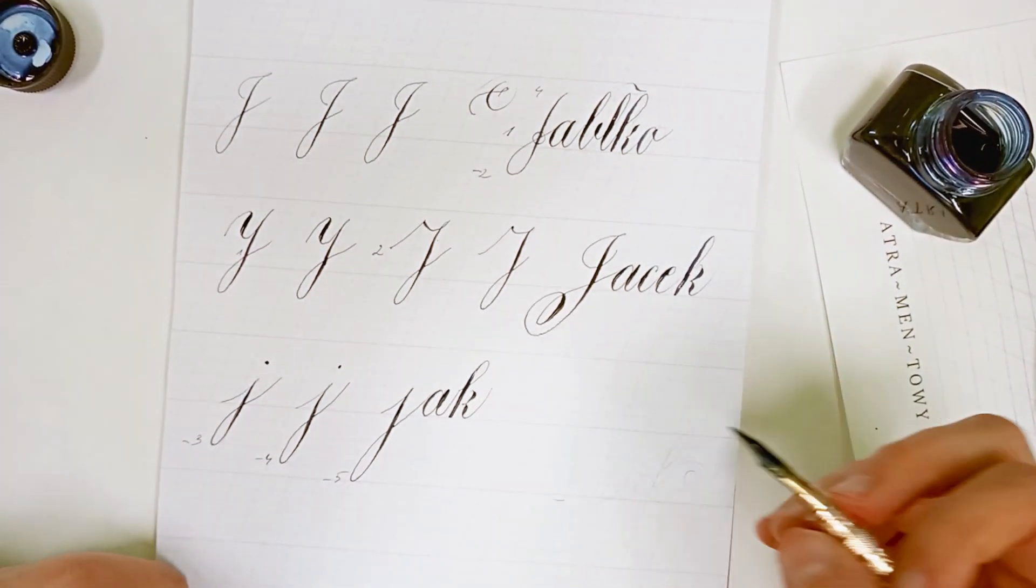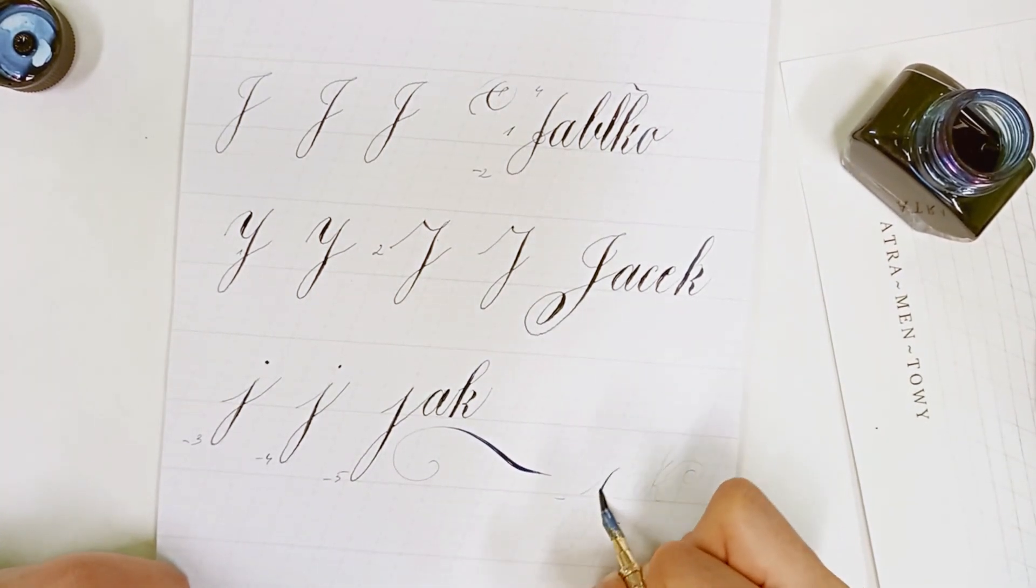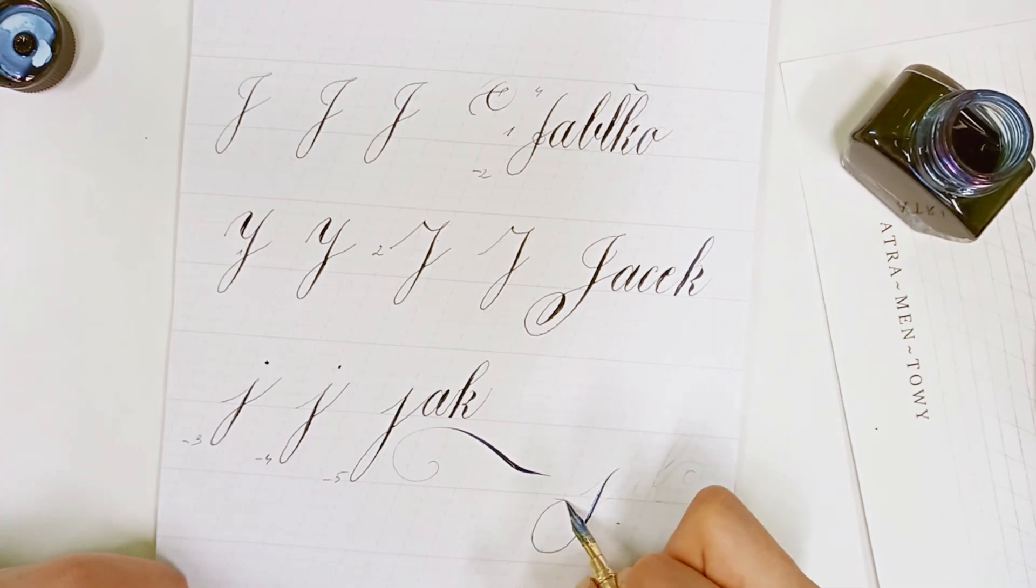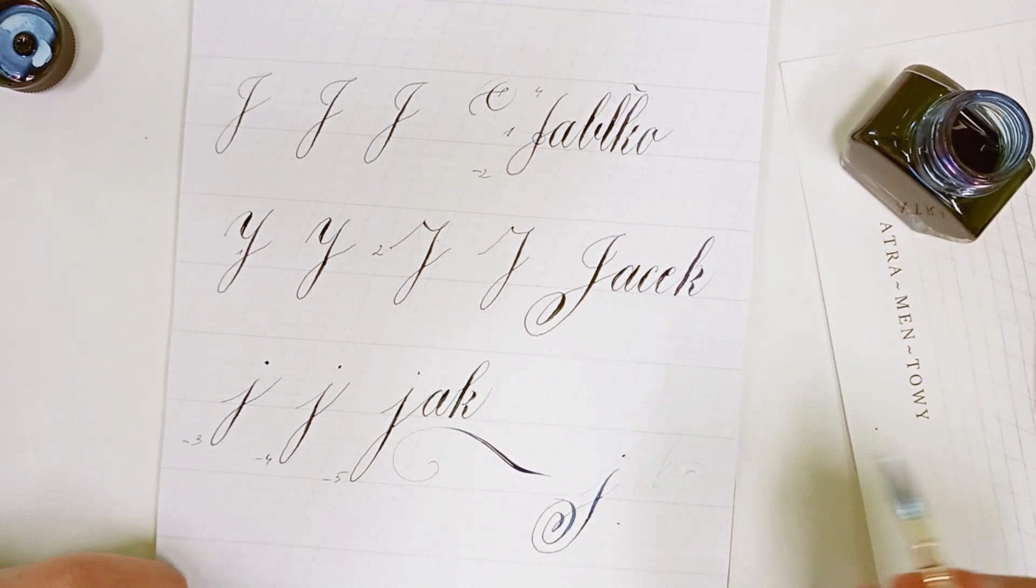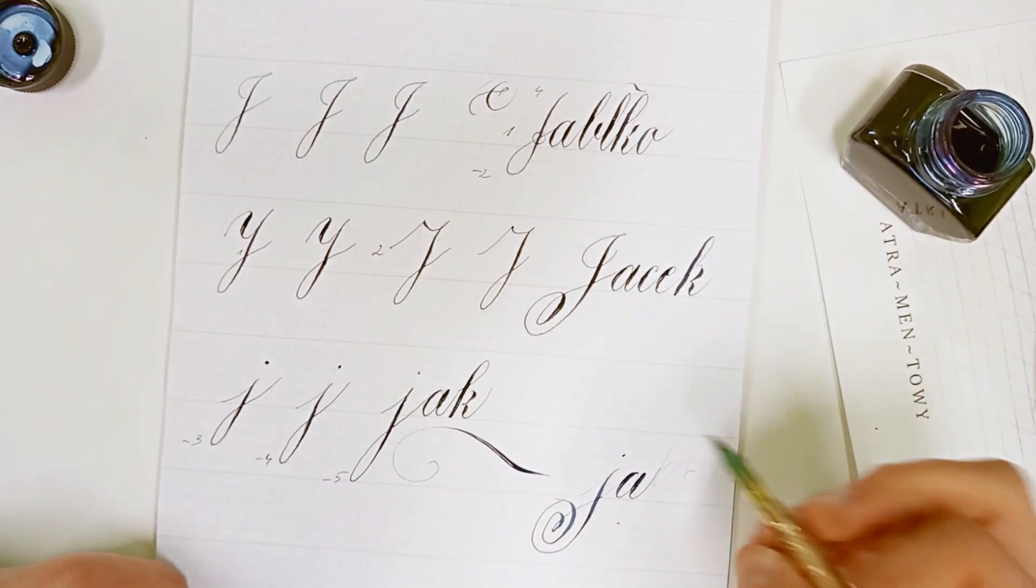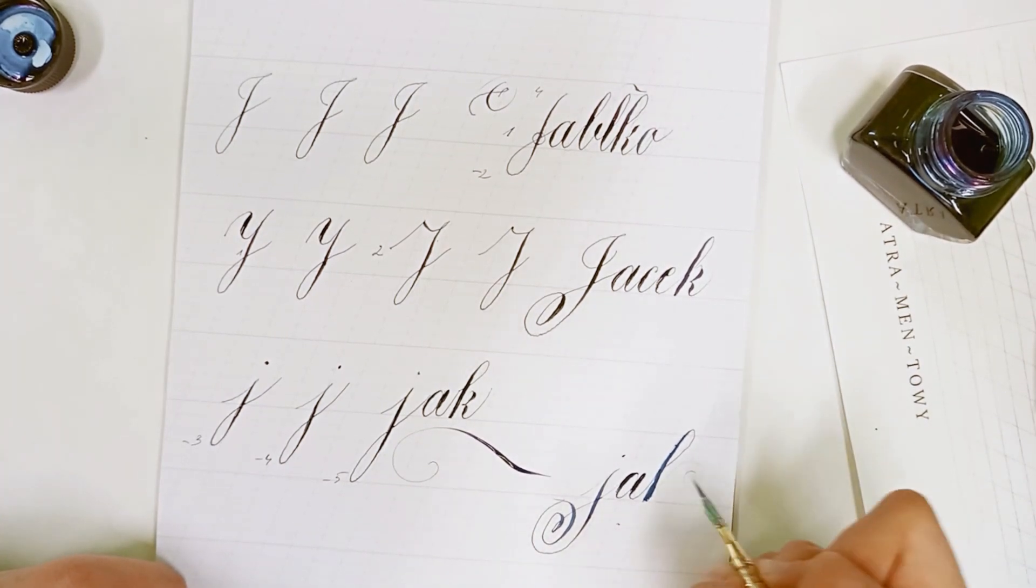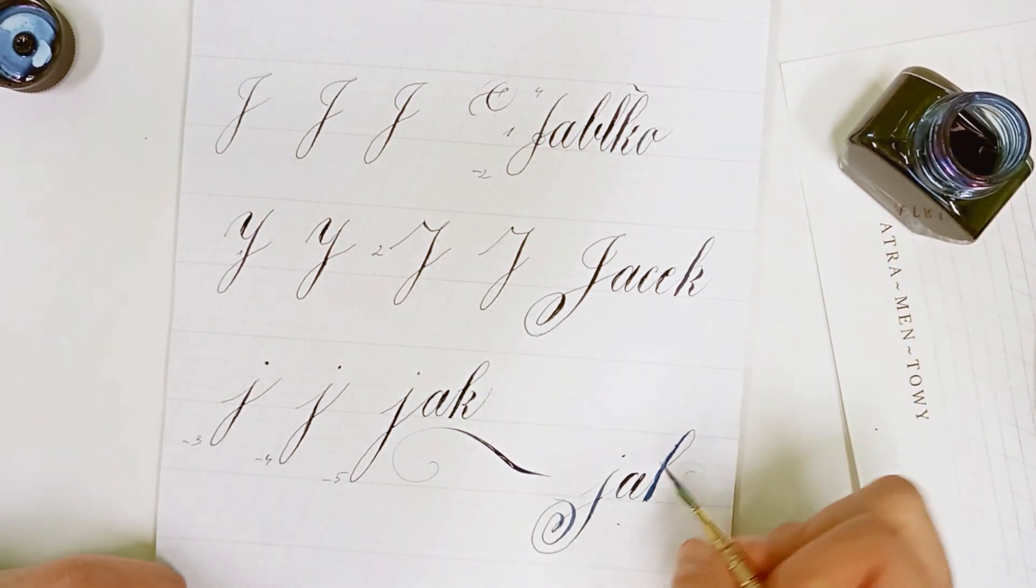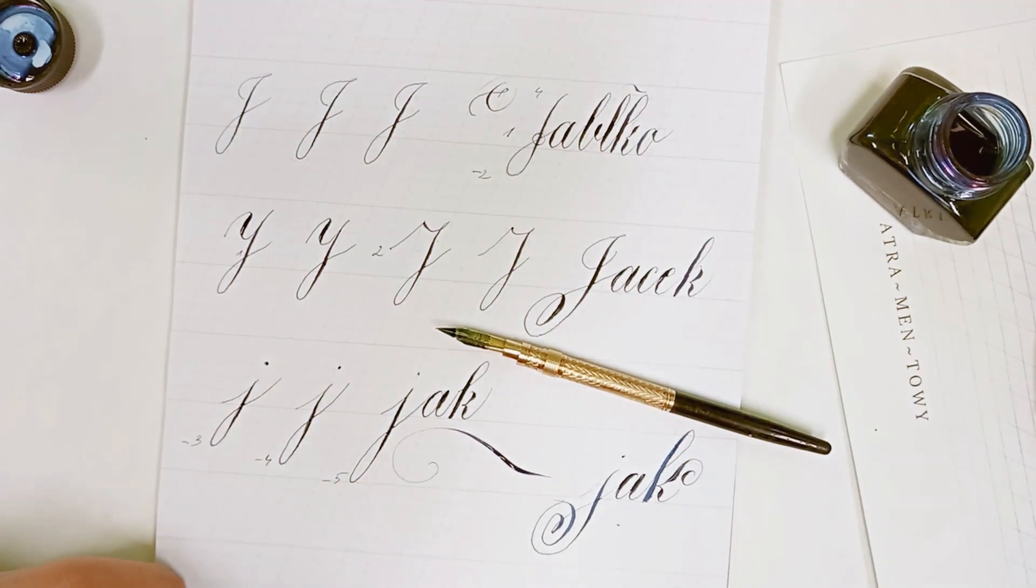I coś dla miłośników bardzo krętej linii. J małe w formie bardzo ozdobnej. A i tutaj kropy nie postawiłem właśnie. Powtórzę słowo jak. Tym razem z mocno ozdobnymi formami liter. No i jak się Państwu podoba litera J?